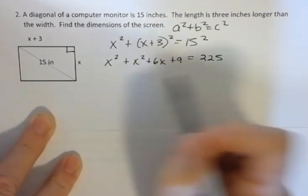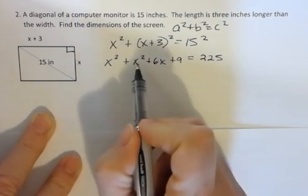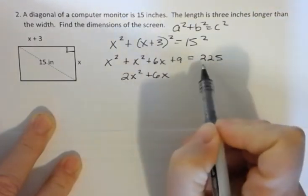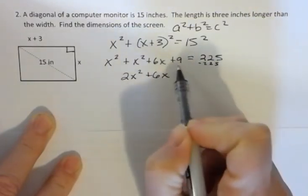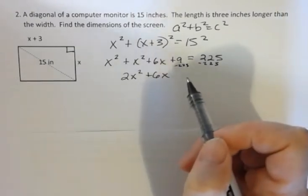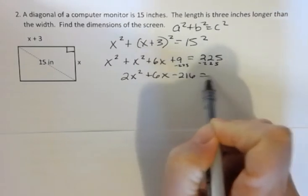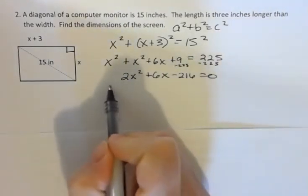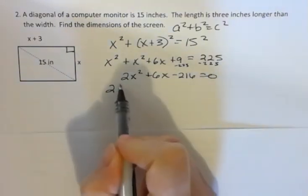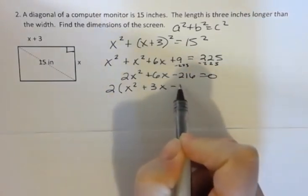Now I'm going to move everything to one side and x squared and x squared is 2x squared and then I'm going to subtract 225 from both sides and that's going to give me negative 216. Now I can factor this. I'm going to take out the common factor of 2. I could really just divide both sides of the equation by 2 but just so we can see what's happening here. We have x squared plus 3x and negative 108.